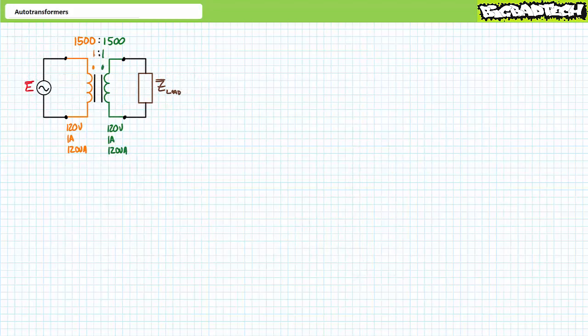Perhaps the easiest way to visualize a step-down auto transformer is to first imagine a traditional one-to-one transformer with primary and secondary windings having identical turn ratios — say, 1,500 turns in the primary and 1,500 turns in the secondary. Let's say this traditional transformer has a 120-volt rated voltage, a one-amp rated current, a power rating of 120 volt-amperes, and weighs eight pounds.